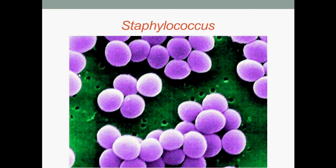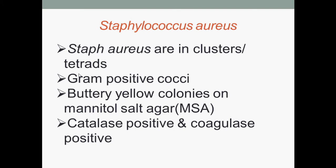Staphylococcus is a genus of Gram-positive bacteria that appear round cocci and in grape-like clusters. They are Gram-positive because they retain the chemical crystal violet, hence they appear purple under microscopic view following a Gram stain.